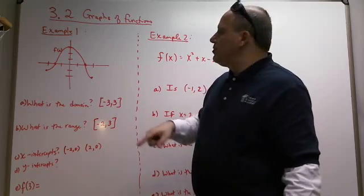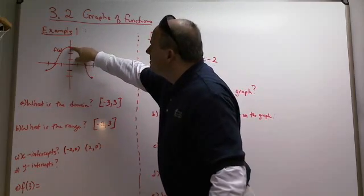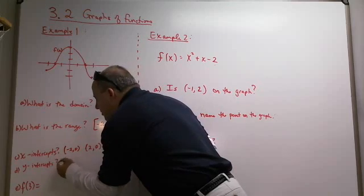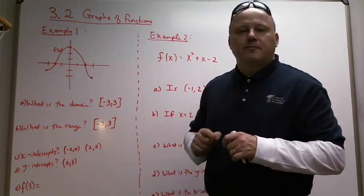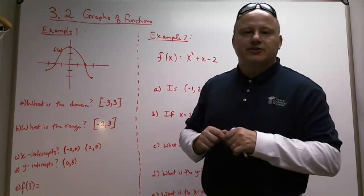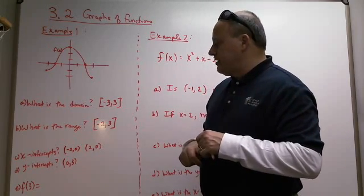Now what are the y-intercepts? The y-intercept is up here, 0, 3. So you can't just say 3, and you can't just say negative 2 and positive. You've got to list them as ordered pairs, like I said on a previous lecture. So 0, 3 is the y-intercept.